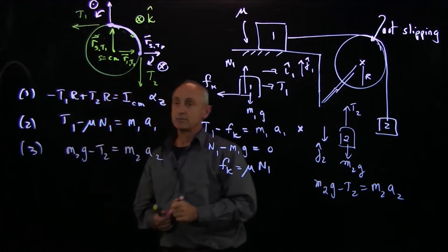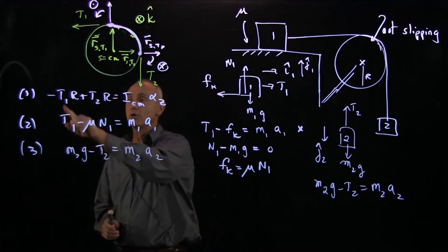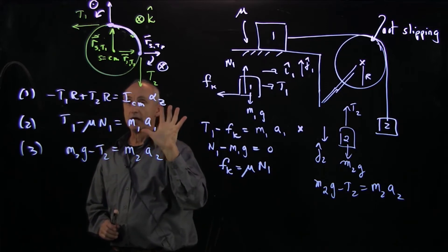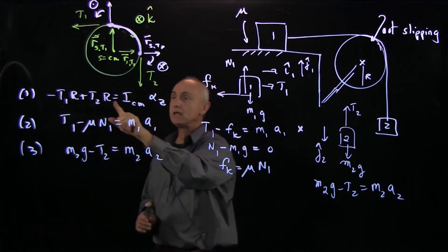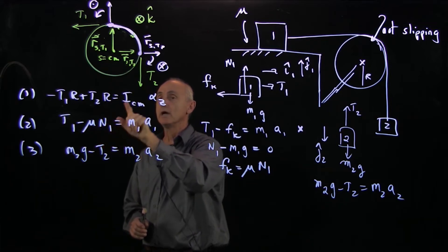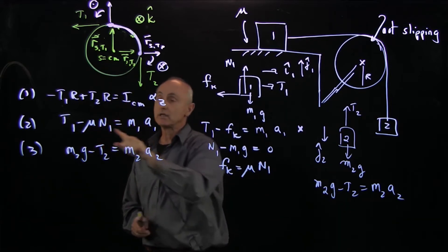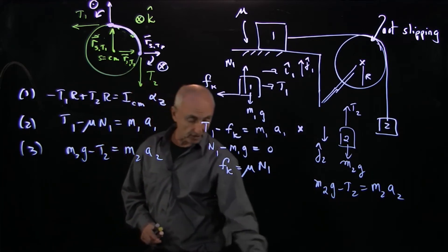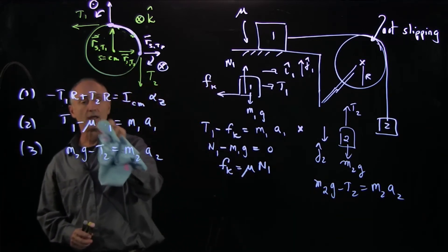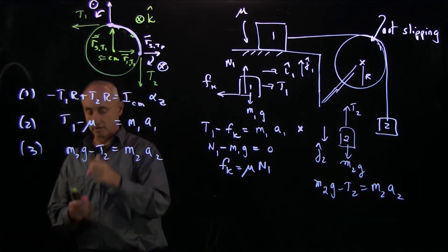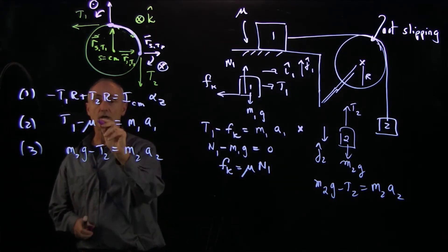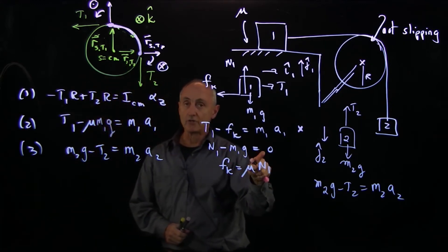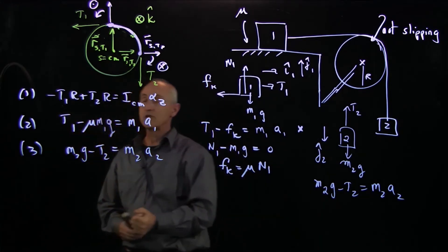Now I look at this system of equations and I have, what are my unknowns: T1, T2, alpha, A1, A2 - five unknowns. I'm treating properties of the system - the radius, mu, ICM. Actually, the N1, because it's M1g, I can simplify this equation and replace this with M1g where I'm already using the other Newton's second law. So I have five equations. I have three equations and five unknowns. I cannot solve this system.